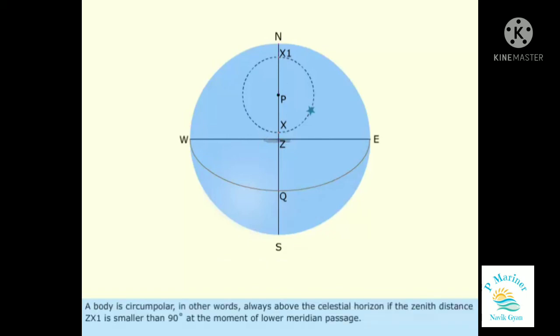A body is circumpolar, in other words, always above the celestial horizon if the zenith distance ZX1 is smaller than 90 degrees at the moment of lower meridian passage.